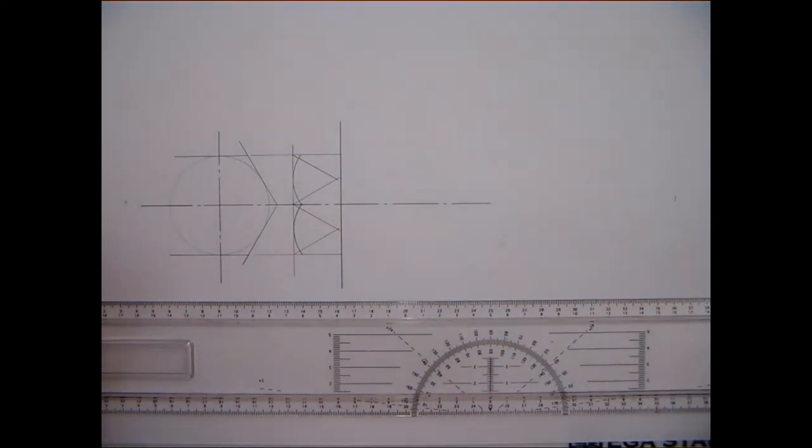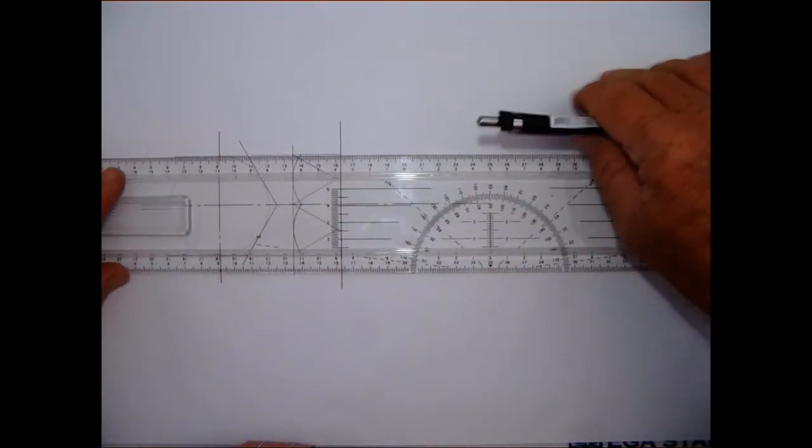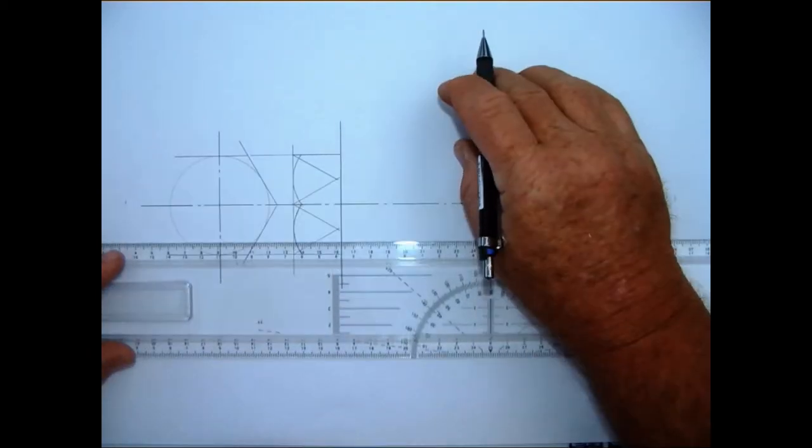And we are finished with the constructions now just for the outside lines. You must note now that that line there goes right through to the top of the sketch.